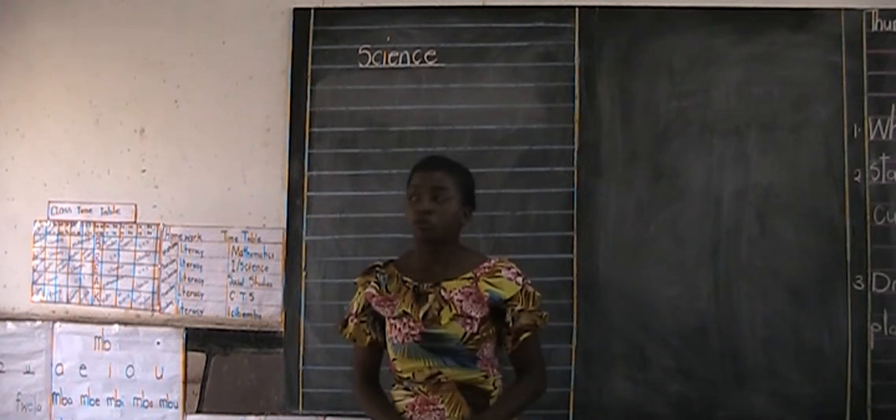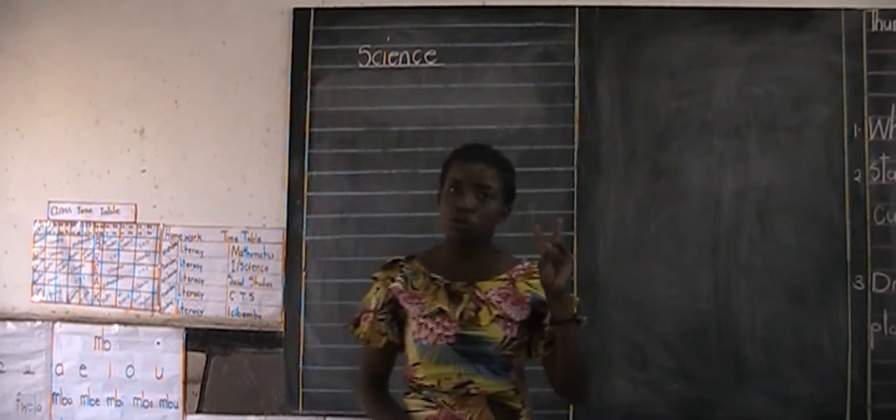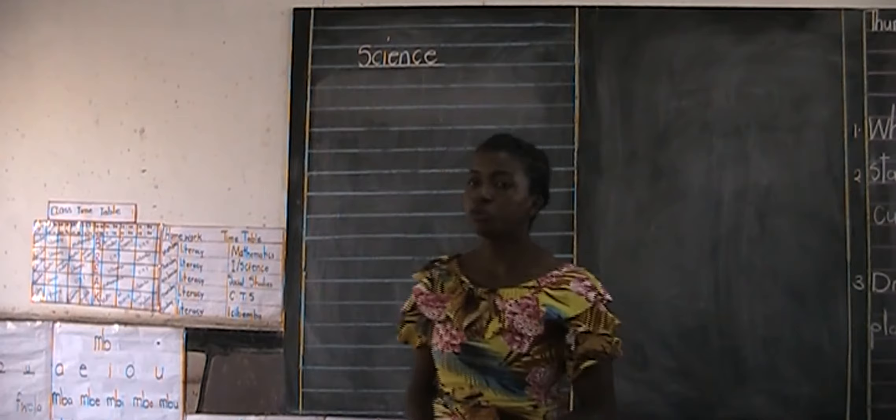So last time in science we were looking at plants around us. We looked at different types of plants found around us. We looked at two different types of groups. Can you tell me the two groups of plants that we looked at?